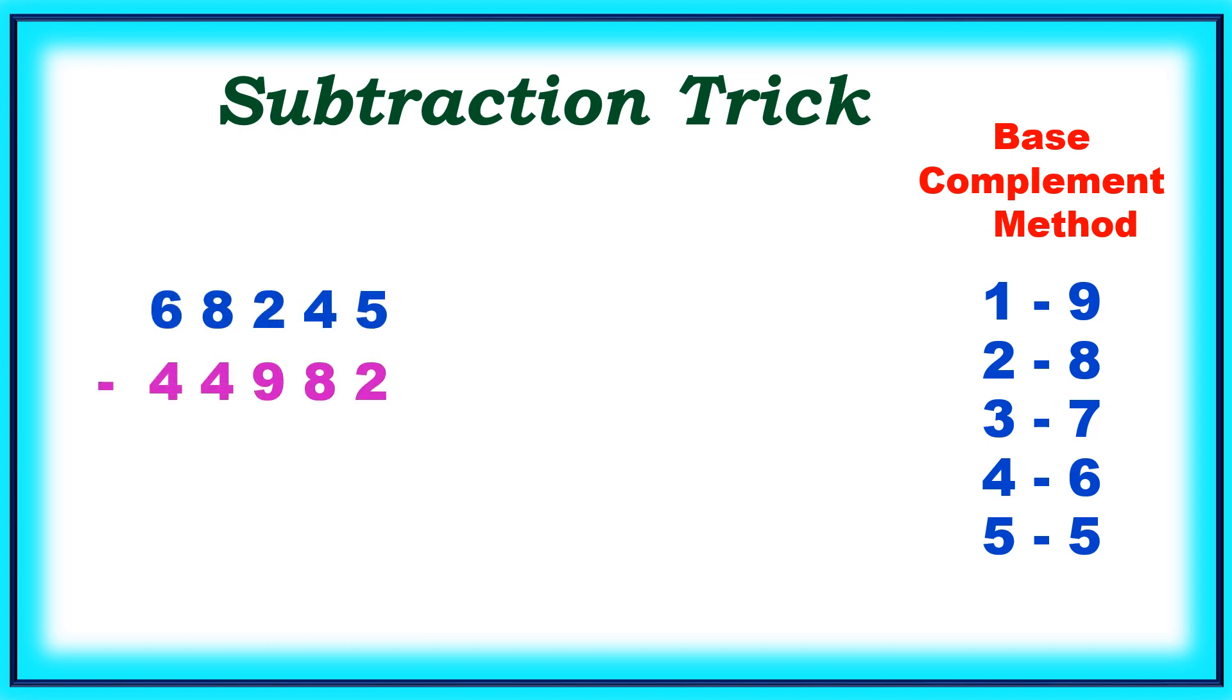We have to subtract 44982 from 68245. 6 minus 4 equals 2. 8 minus 4 equals 4. Next number is not possible because 9 is bigger than 2.